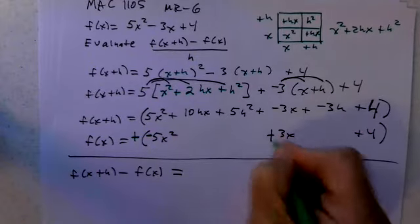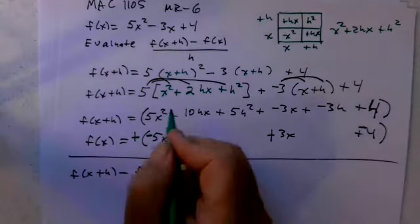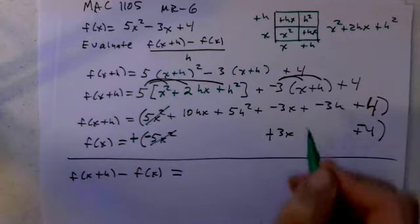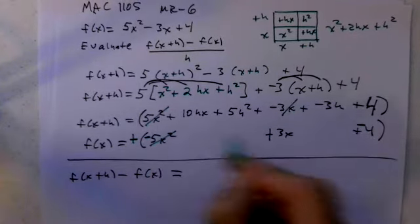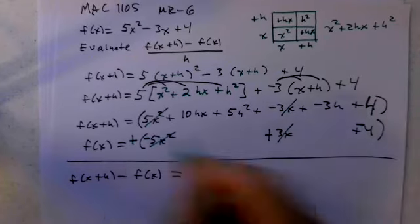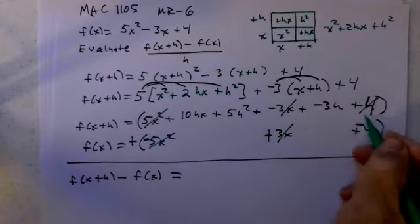That becomes minus, that becomes plus, that becomes minus. You'll notice 5x² minus 5x² is gone. Negative 3x plus 3x is gone. 4 plus negative 4 is gone.